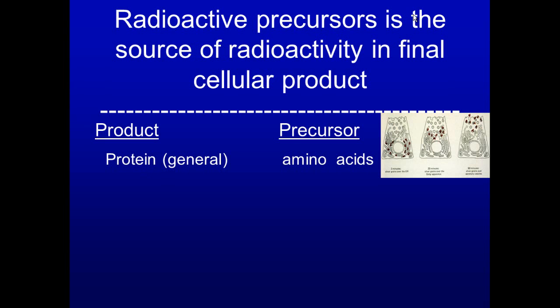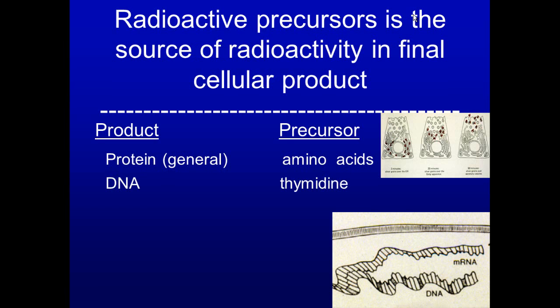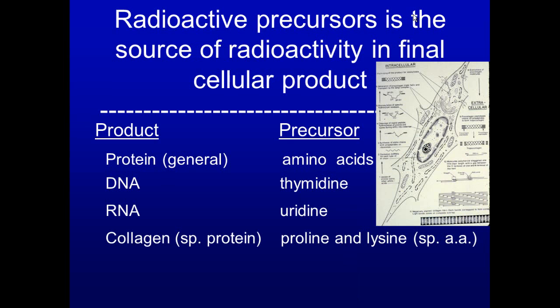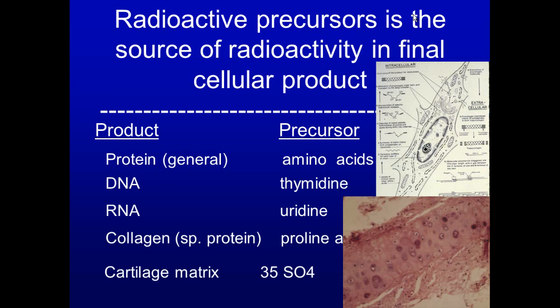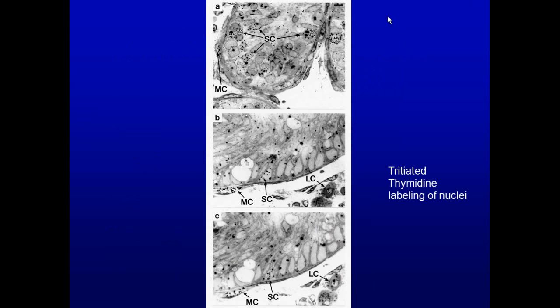In order to study various products, we provide radioactive precursors. For a general protein, the precursor would be amino acids — that's what PLOTA used. For DNA, you would use thymidine. For RNA, you would use radioactive uridine. For collagen protein, you would use proline and lysine. However, if you want to look at the cartilage matrix or the differentiation of cartilage or bone, you would use sulfur S35 to detect radioactivity there.